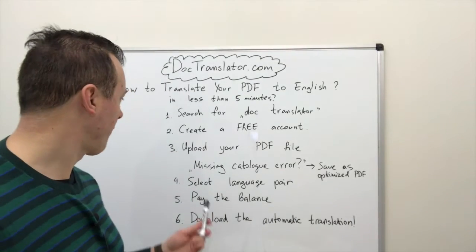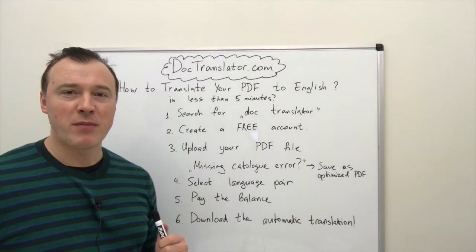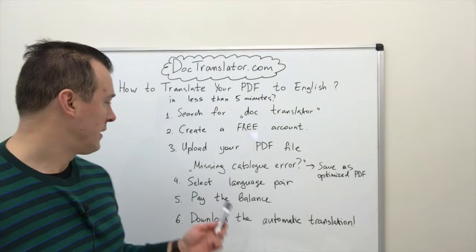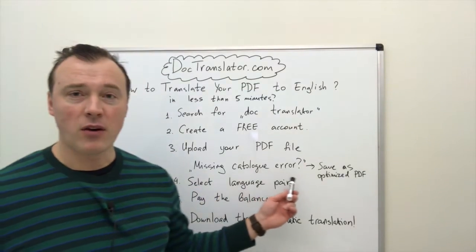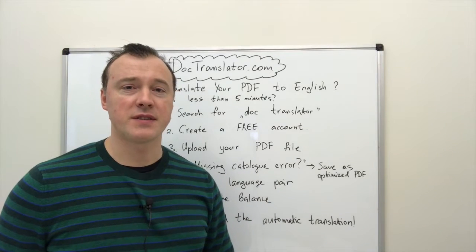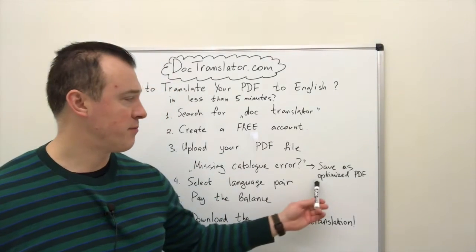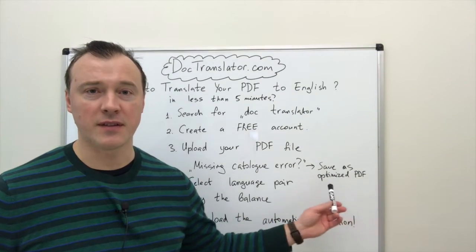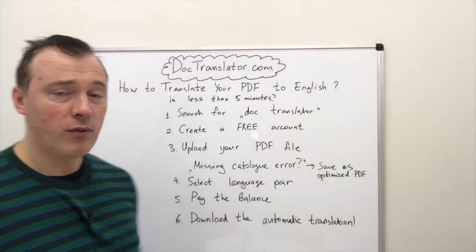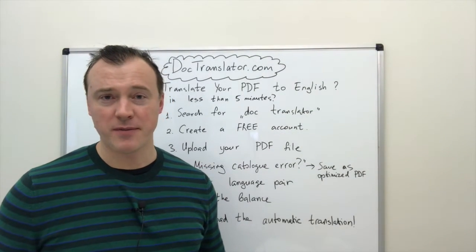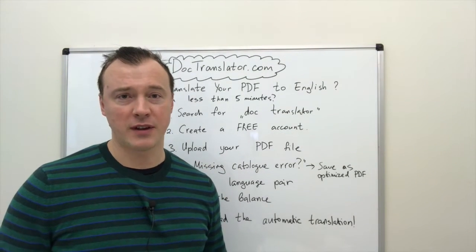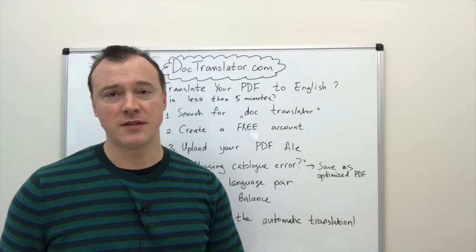Step number three: you need to upload your PDF file. If you get the missing catalog error, please make sure your PDF is saved as an optimized PDF — that's the quick solution for that. Step number four: you need to select your language pair. If it's Spanish, then select original Spanish, and if the translation is in English, set it up in English.